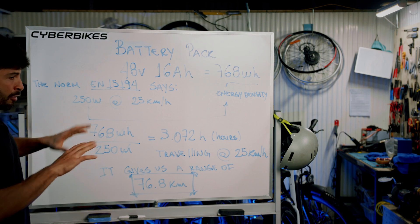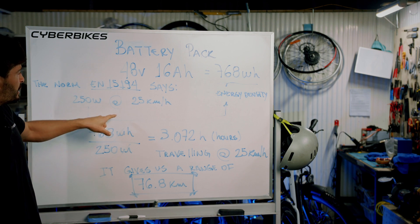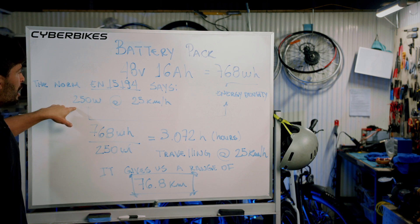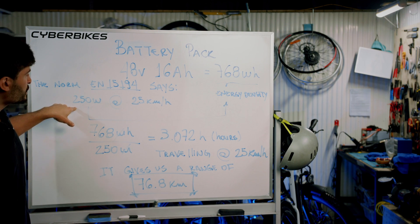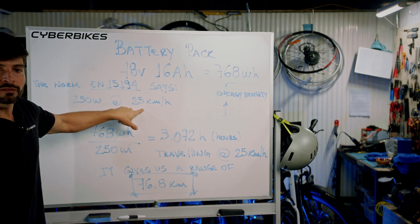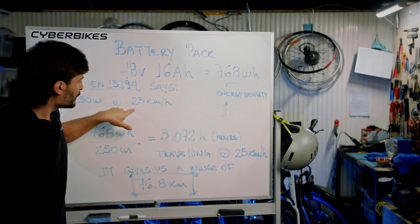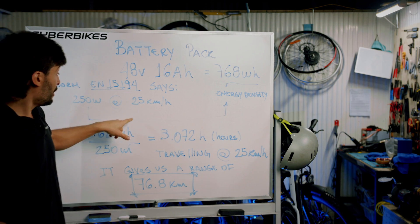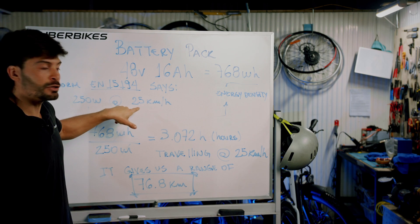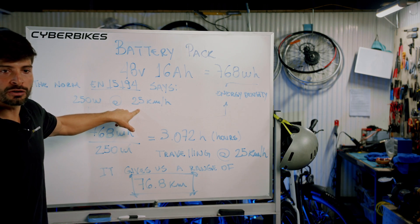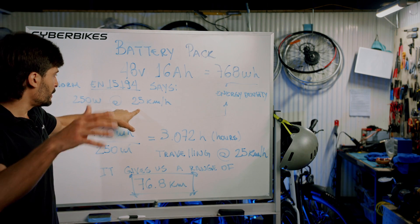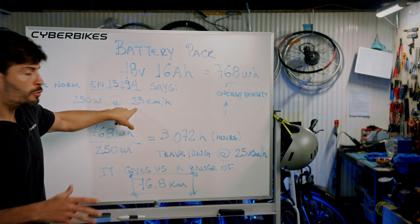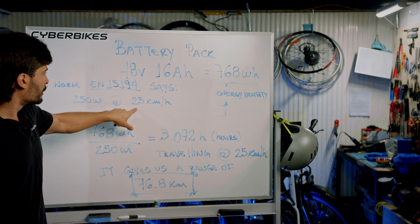Anyway, this norm — which I completely disagree with — says the bike has to have a continuous output of 250 watts at 25 kilometers per hour. That speed is pretty much the highest average speed you can achieve traveling through the city, so it's a good estimate.